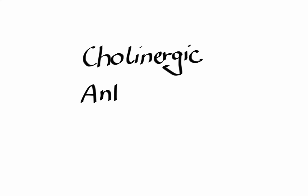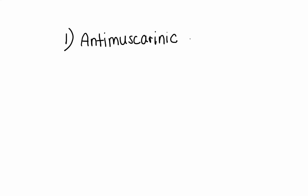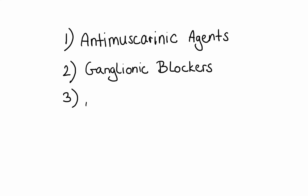In this video, I'm going to cover cholinergic antagonists. Cholinergic antagonists can be divided into three groups: first, anti-muscarinic agents; second, ganglionic blockers; and third, neuromuscular blockers.